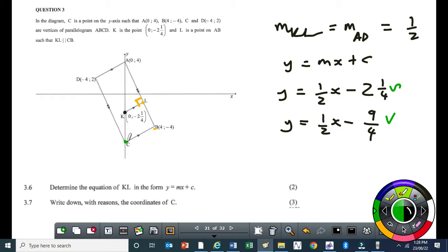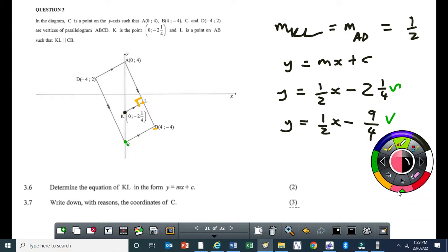Well, in my case, what I'll do, since AD is parallel to BC, means the gradient of BC is also equal to the gradient of AD. Are you following that? So, M AD is equal to M BC, and that's equal to half. Why? Because AD is parallel to BC. Are you following that?